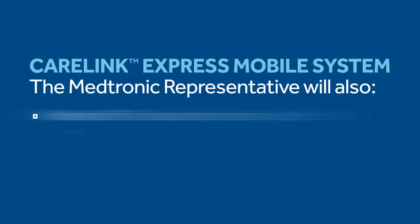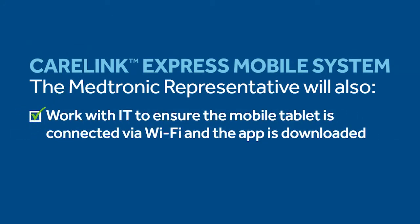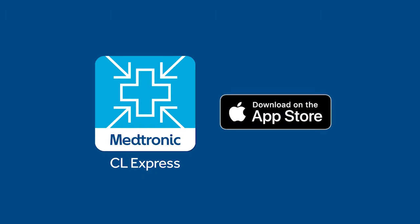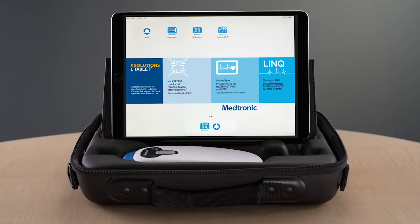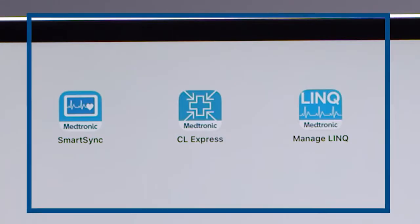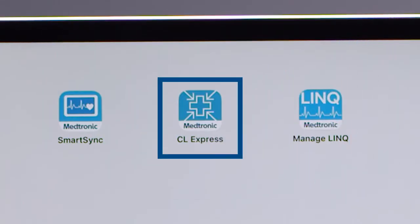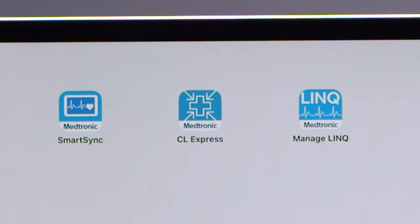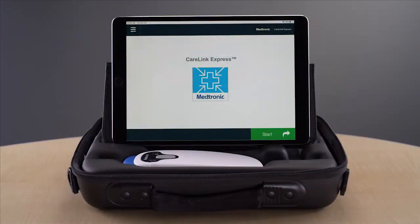Once the profile is configured, your Medtronic representative can work with your IT department to make sure the mobile tablet is connected via Wi-Fi and that the app is downloaded. The free app is only available on the iTunes Apple App Store. Once it's downloaded, the app resides on the desktop of the mobile tablet being used for device checks. Now it's all set to go. Once you open the app, all you need to do is follow the step-by-step animations to complete a device check.